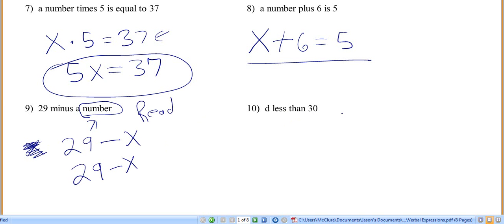D less than 30, right? So you've got D less than 30. Is that right? What do you think?